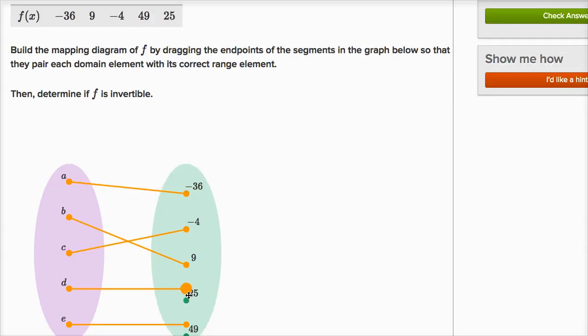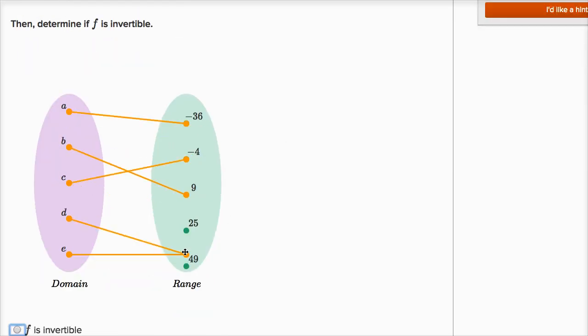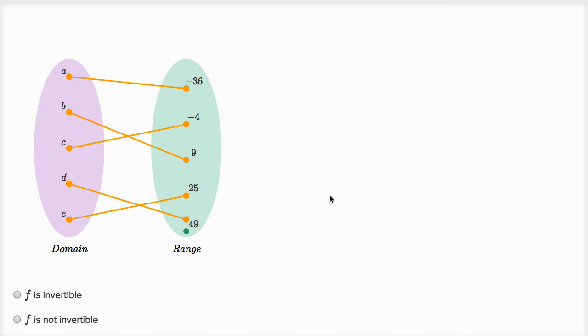D maps to 49. And then finally, E maps to 25. E maps to 25. Now is this function invertible?